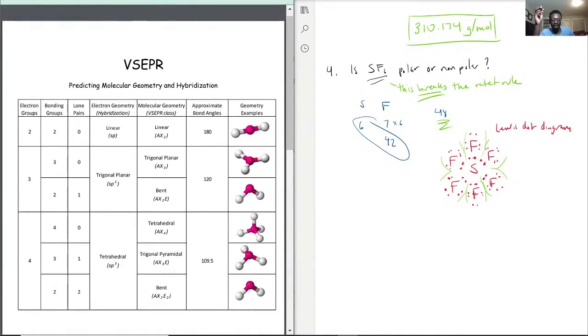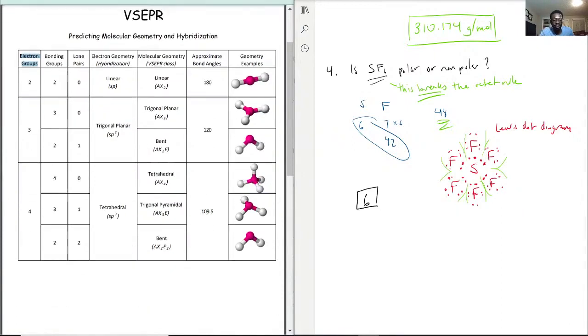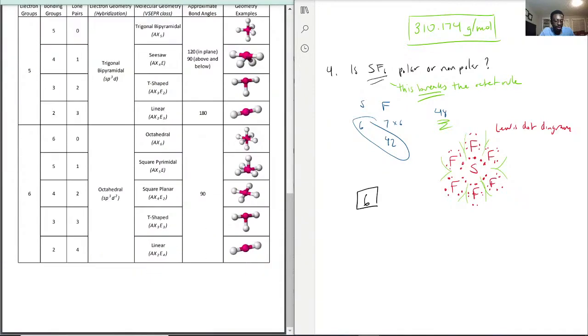That is the number of pairs you have, whether they're lone pairs or in a bond. So sulfur, its electron group is 6. And most things like to have an electron group of 4 because that's the octet rule, 4 pairs of electrons. But sulfur is like yeah I don't really care about that. So that's how we got there. So we scroll all the way down to 6.